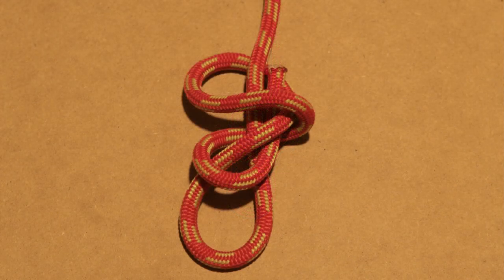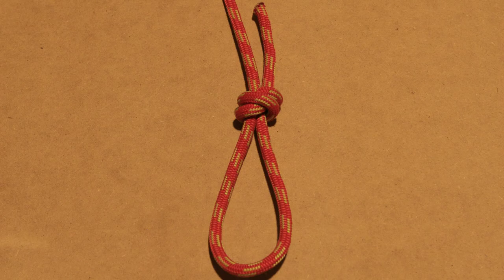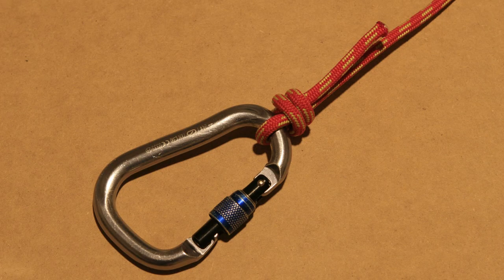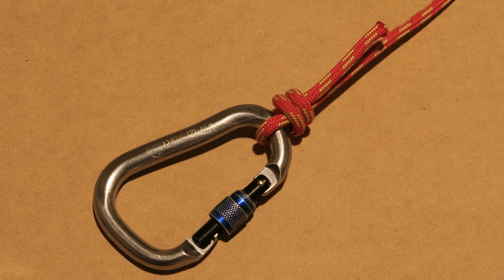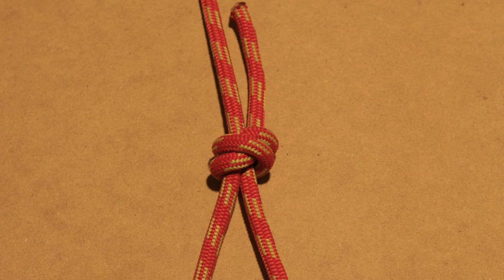Here, let me zoom in a bit so you can have a better look. And there you have your double fisherman's loop. Now clip in your carabiner and pull the loop tight. If you want to try an alternative, make sure to check out the anchor hitch. The anchor hitch is also a solid method to attach a carabiner to your climbing line.